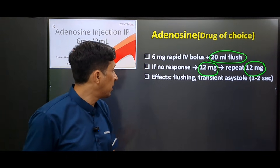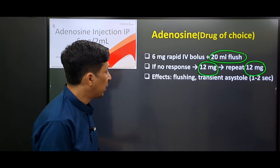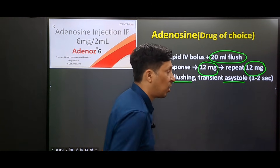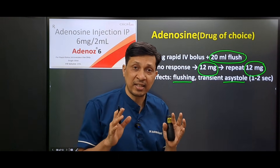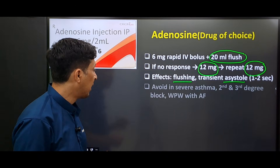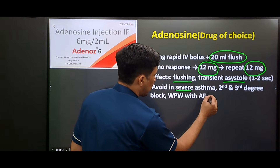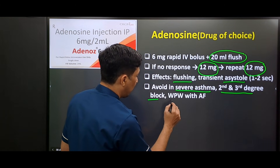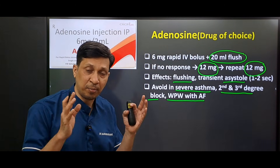An important thing is that after giving adenosine you may see transient flushing and transient asystole for 1 to 2 seconds, but it is transient and the patient recovers within seconds. This drug is to be avoided in severe asthma, second and third degree heart block, and also in WPW syndrome with atrial fibrillation.